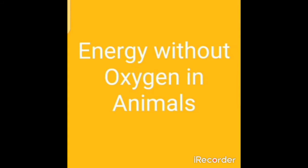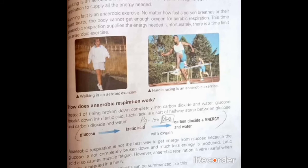Now we will study about energy without oxygen in animals. Animals perform both aerobic and anaerobic respiration. Aerobic respiration takes place in normal situations — when we are walking or sitting — because the required amount of oxygen is obtained by the body. But when we start running, our body's requirement for oxygen is not fully met. Each and every cell will not be able to obtain oxygen, so the parts which do not obtain oxygen start anaerobic respiration — that is, respiration without oxygen.